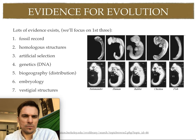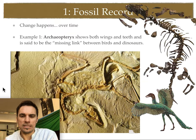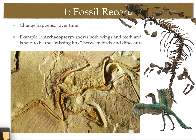Diving into the first piece of evidence: the fossil record. This is a really nice, tangible piece of evidence for evolution because you can see, touch, and feel it. This example here is something known as the Archaeopteryx. Here's an artist's rendition of what the Archaeopteryx would have looked like. Scientists found this fossil in some sandstone, and if you look carefully, you can see some claws and something amazing — feathers throughout this area.